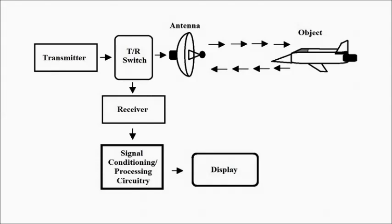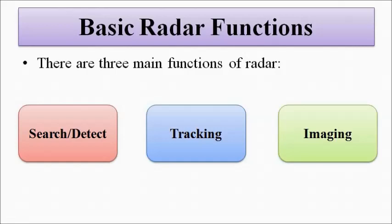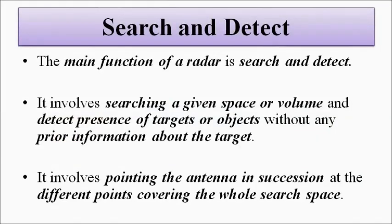The basic functions why radar is generally implemented are: first, search and detect; tracking; and imaging. We'll discuss each of them separately. The first and most important purpose or function of radar is search and detect. This involves the radar installed at a particular place. It has to search a given space or volume and detect the presence of a particular target or object in any situation. In this case, it has no previous information about the nature of the target.